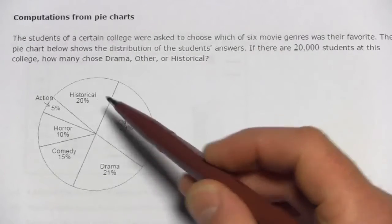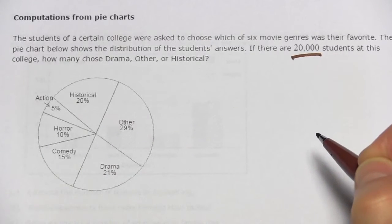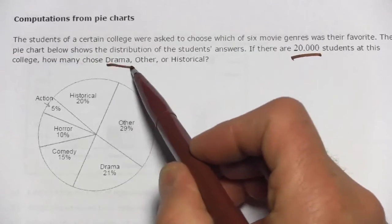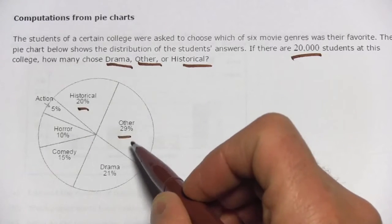In the chart, we're just given percents. The whole thing adds up to 20,000. If we want to find out the actual number of students that chose drama, other, or historical, what we need to do is add up the percents for those three.